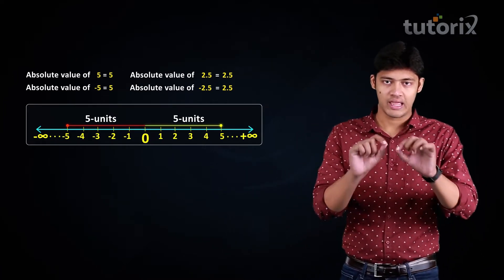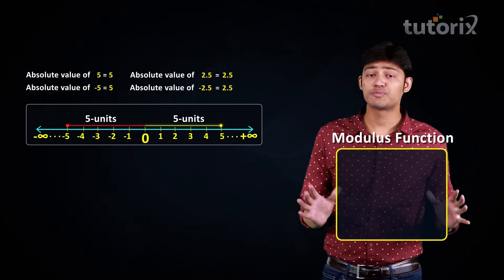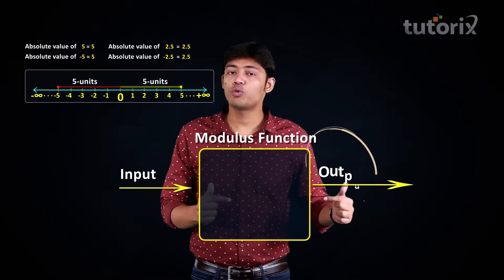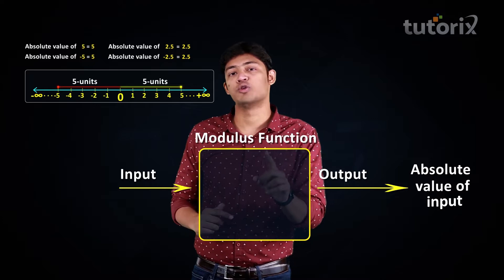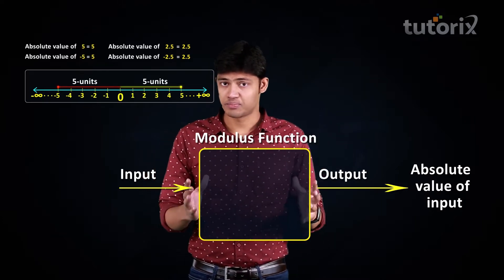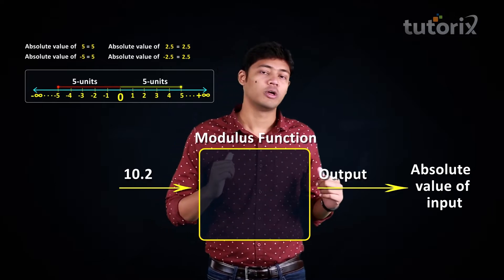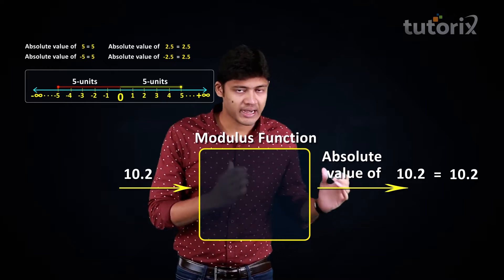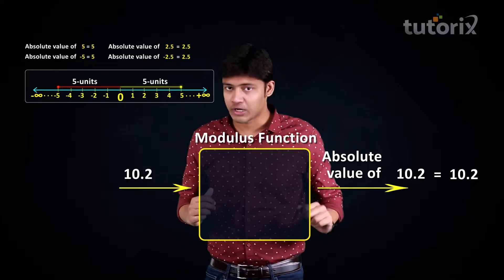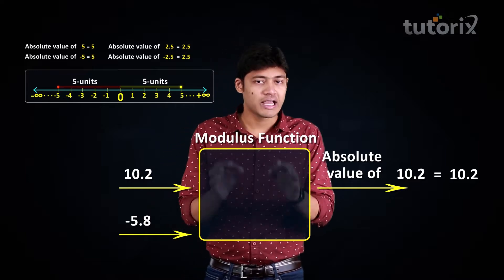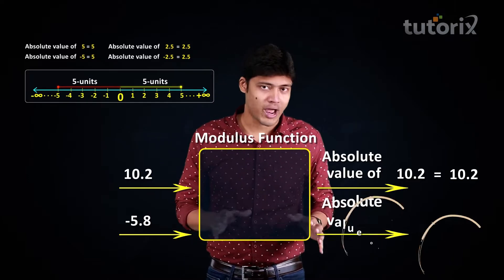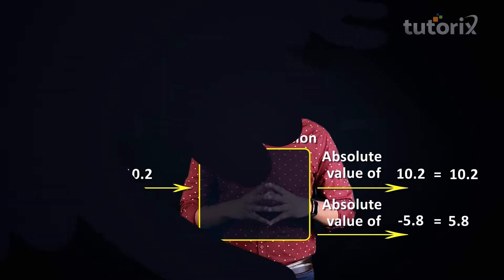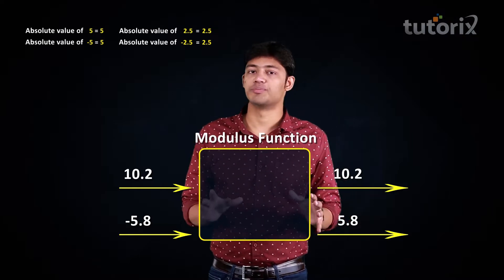With this concept as the basis, let's try to design a function. The specialty of this function is that it accepts inputs and the outputs will be the absolute values of the inputs. For example, if the input is 10.2, the output will be the absolute value of 10.2, which is 10.2 itself. If the input is minus 5.8, the output will be the absolute value of minus 5.8, which is 5.8.